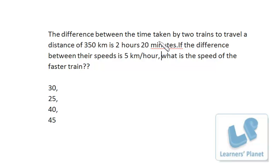The difference between the time taken by two trains to travel a distance of 350 km is 2 hours 20 minutes, that means 2 and 1/3 hours. If the difference between their speeds is 5 km per hour, what is the speed of the faster train?